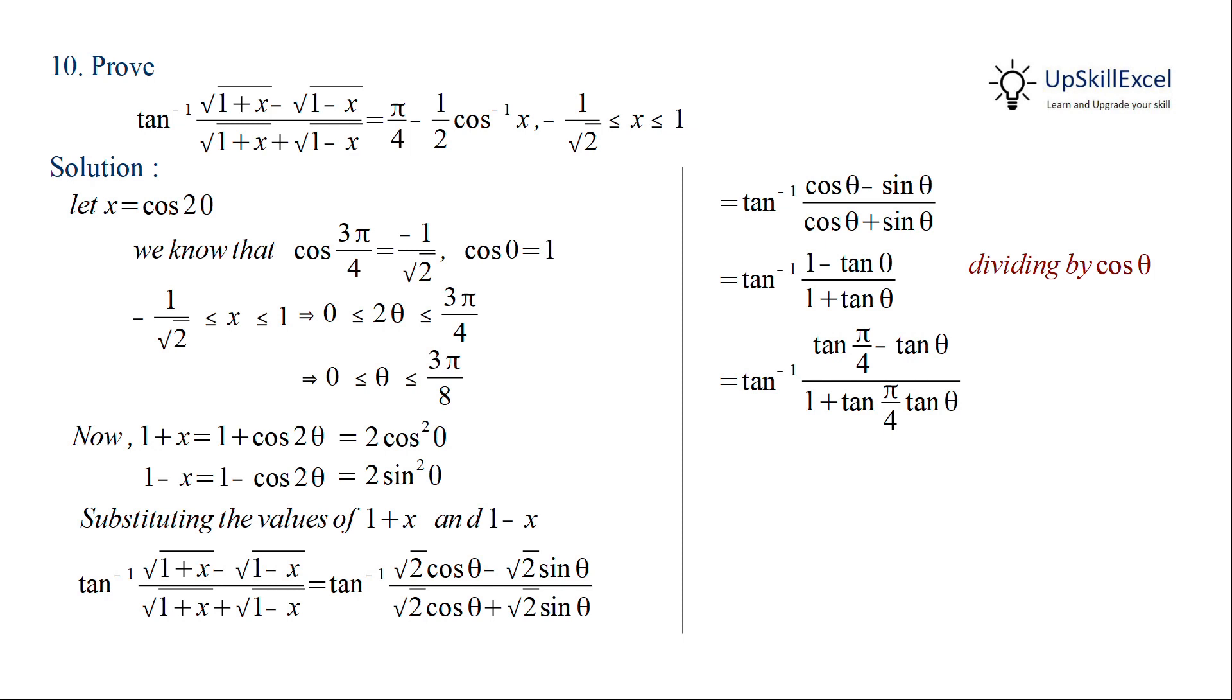Replacing this by tan a minus b formula and simplifying, we get pi by 4 minus theta. Note that theta belongs to 0 to 3 pi by 8, so pi by 4 minus theta belongs to minus pi by 2 to pi by 2, which is the principal branch of tan inverse.